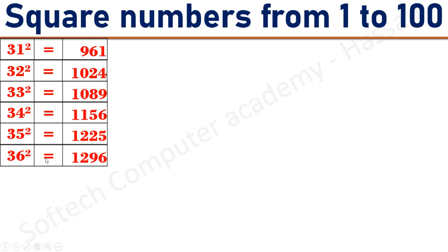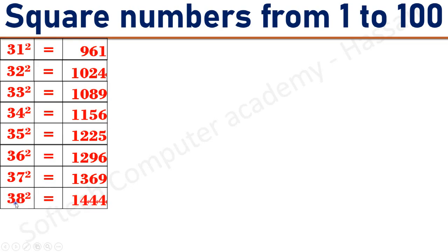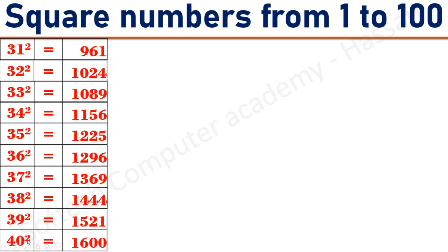36 square equals 1296. 37 square equals 1369. 38 square equals 1444. 39 square equals 1521. 40 square equals 1600.